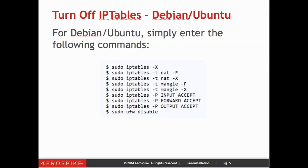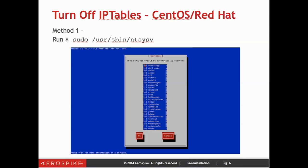If you're on Debian or Ubuntu, you can turn off IP tables just by issuing the following commands — fairly simple commands to run. If instead you're on CentOS or Red Hat, you can go ahead and run the NTSYSV command. When you do that, you'll notice there is an area that says IP tables, which has been turned off within this interface, and you can go ahead and save that.